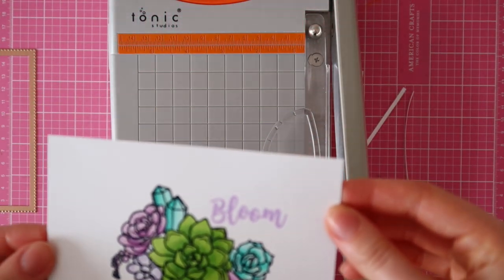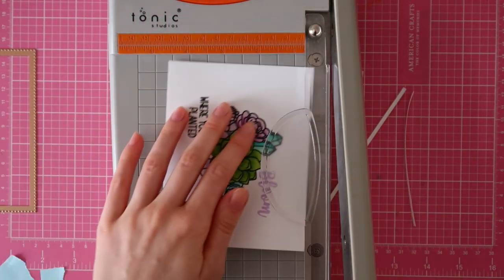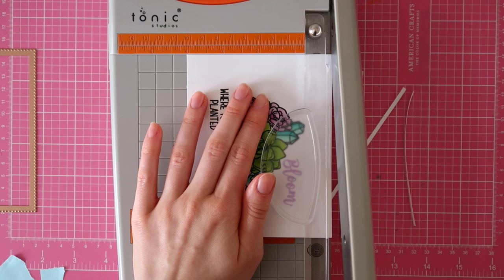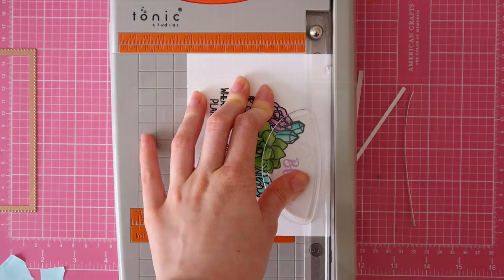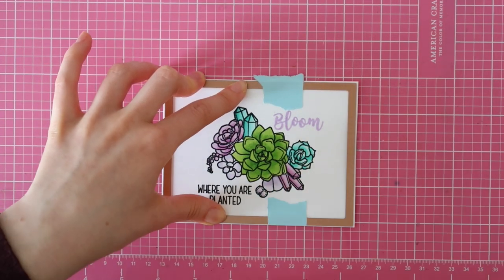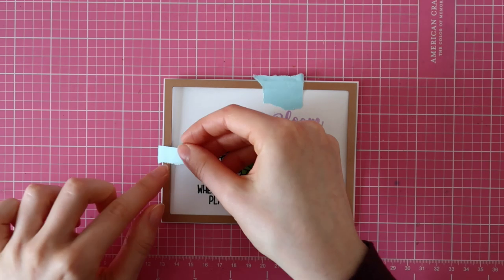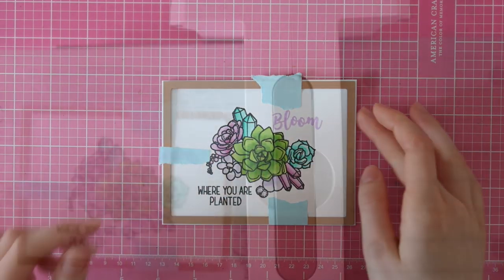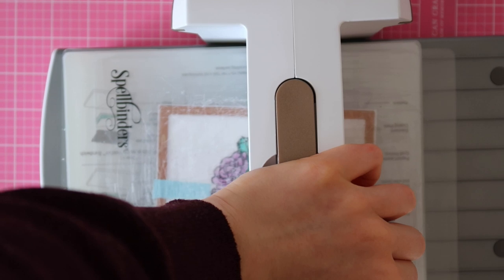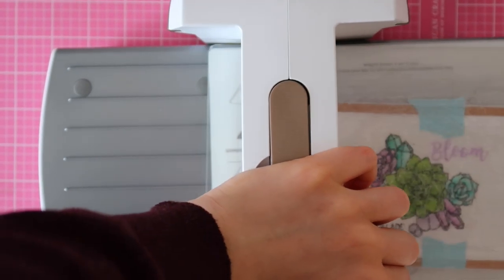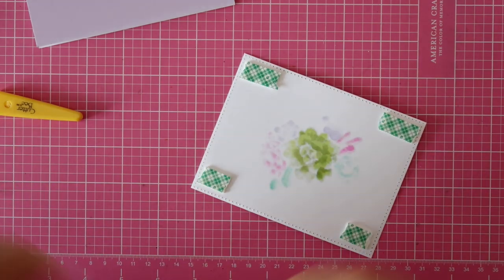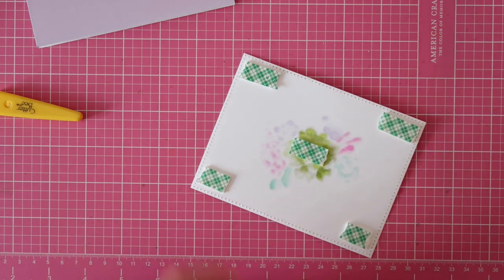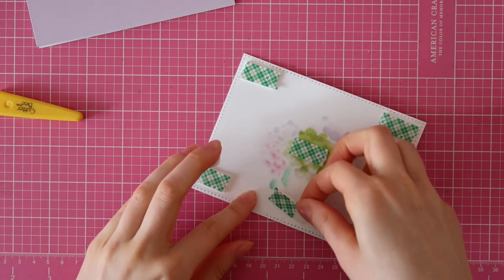I'm just using my heat tool to heat emboss the powder. And then I'm using my Tonic guillotine trimmer to trim down my piece to four inch by five and a quarter. Next, I am using this die from Spellbinders to add some pierced edges to this card front. This die cut set is actually discontinued, so unfortunately I can't link to it, but there are similar die cut sets out there that you can use.